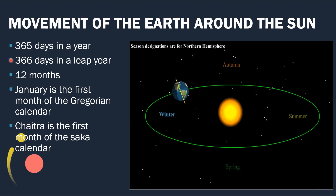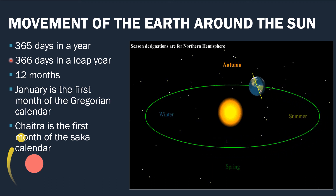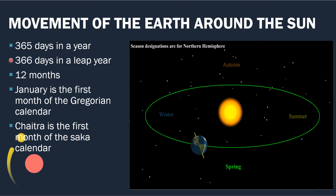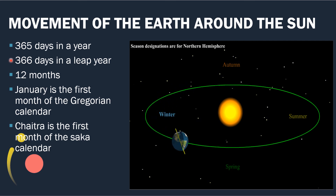A leap year is a year where an extra day is added to the end of the shortest month, February. February has 29 days in a leap year.